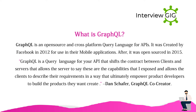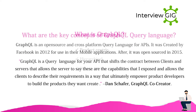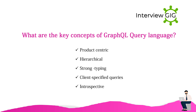GraphQL is a query language for your API that shifts the contract between clients and servers. It allows the server to say what capabilities it exposes, and allows clients to describe their requirements in a way that empowers product developers to build the products they want. — Dan Schaefer, GraphQL co-creator.